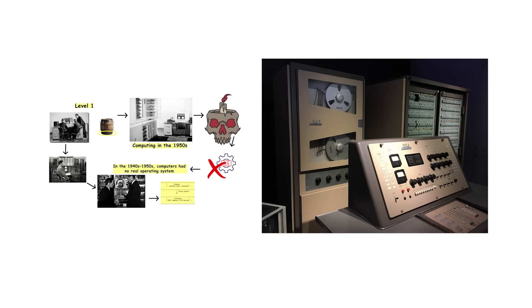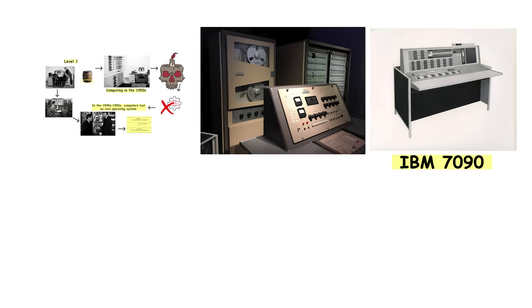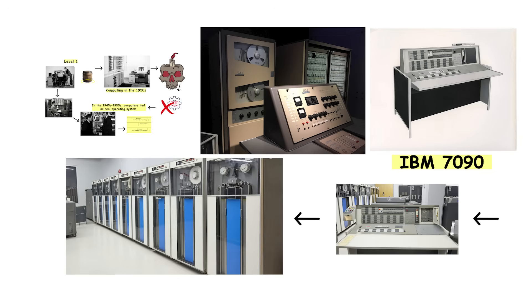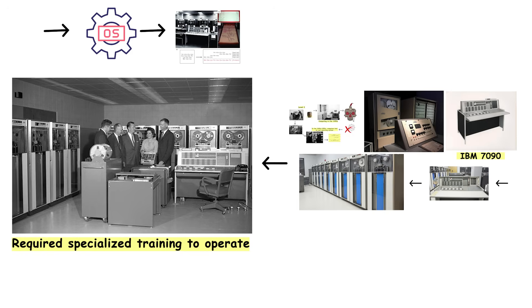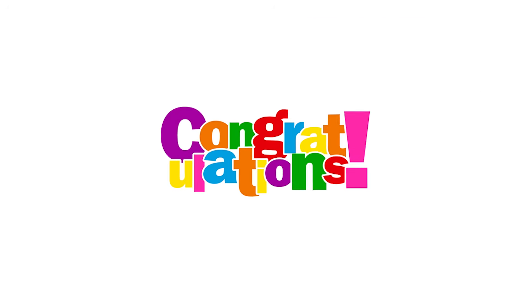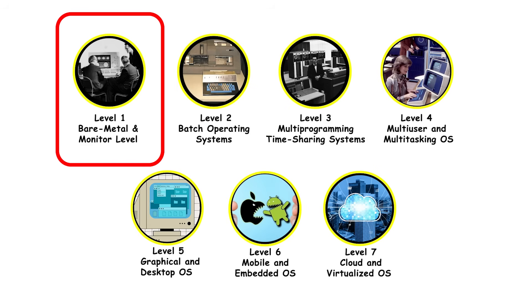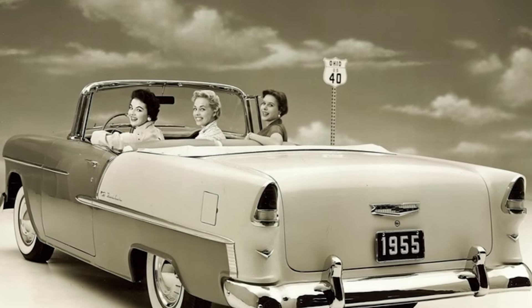Level 1 represents the earliest mainframes — machines like the IBM 7090 that filled entire rooms. These weren't personal computers; they were institutional resources that required specialized training to operate. The operating system was basically just a bootloader. If you think this is how computers still work, congratulations — you have Level 1 understanding. You're stuck in 1955.